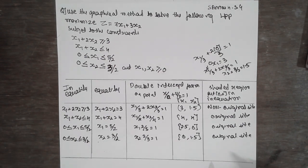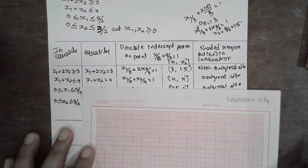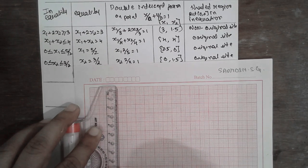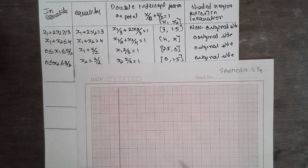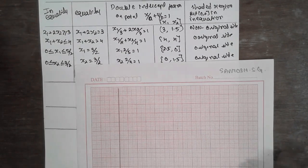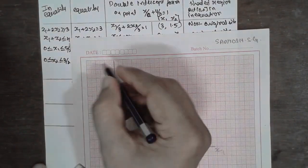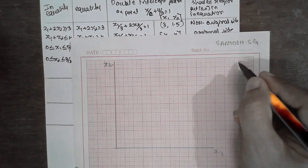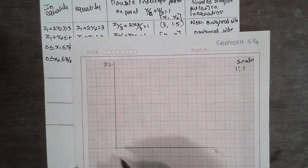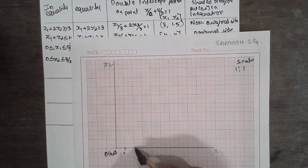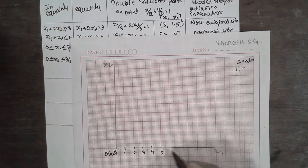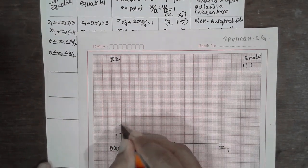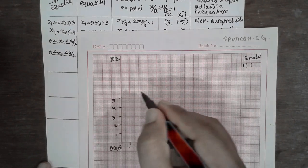Now draw the graph based on this data. Consider x1 and x2 as axes with a scale of 1 cm equal to 1 unit. Mark the origin O at (0,0) and label the x1 axis with values 1, 2, 3, 4, 5, 6, and likewise on the x2 axis.